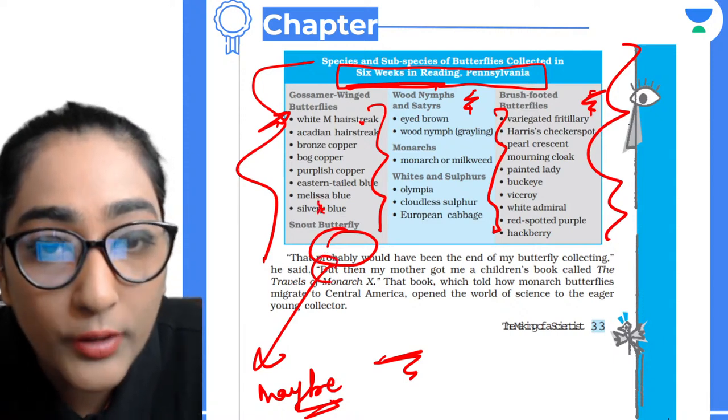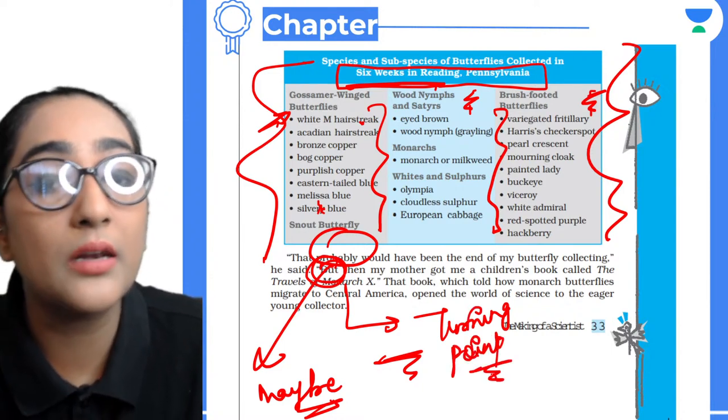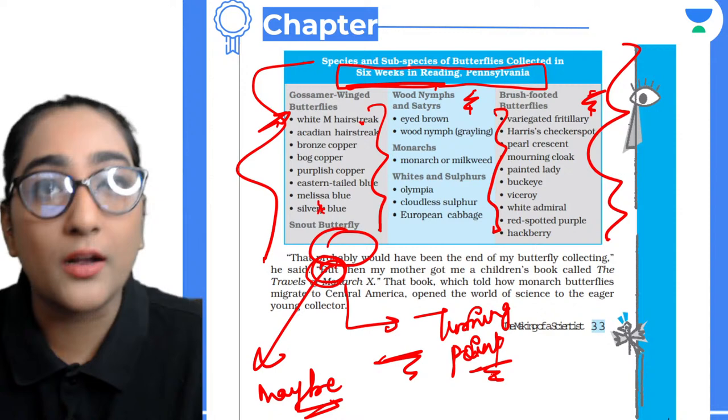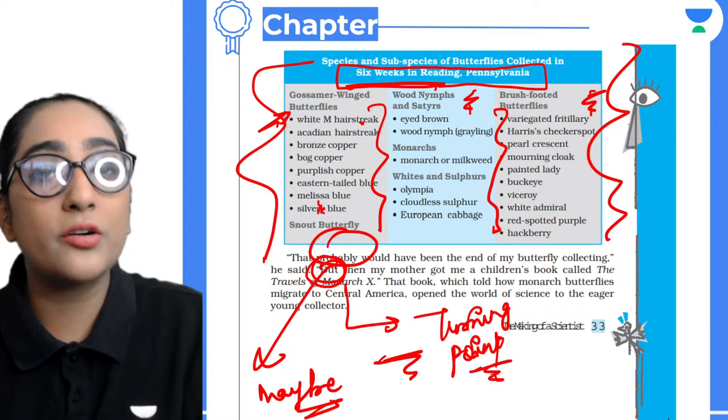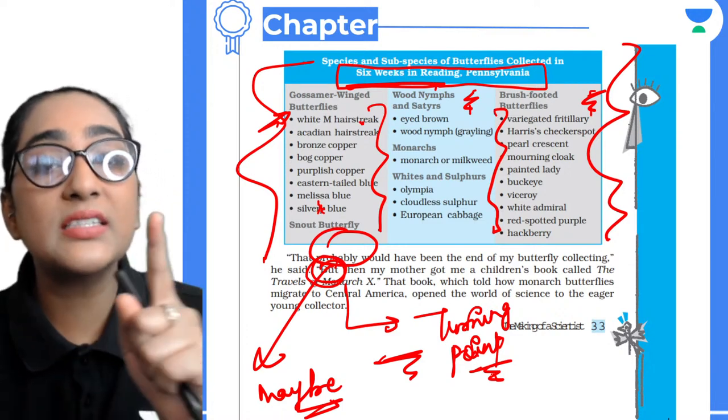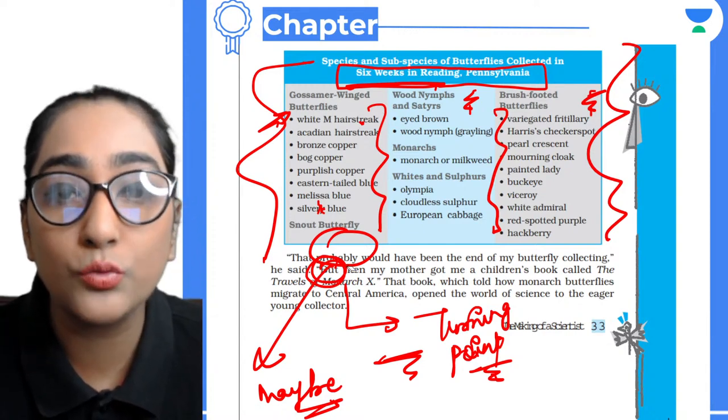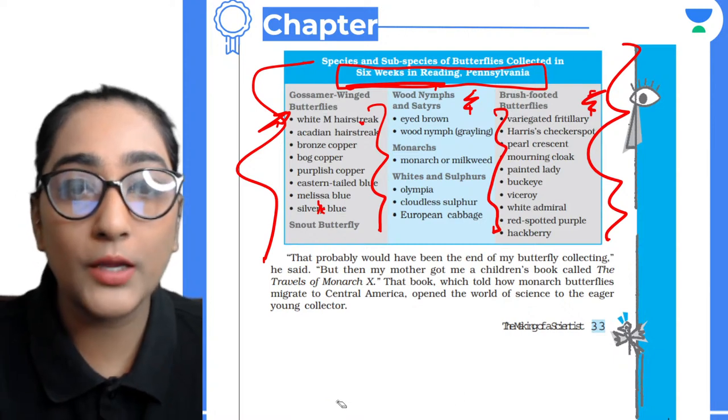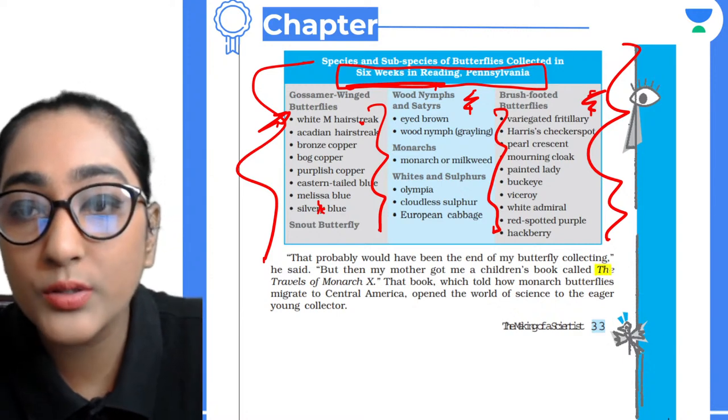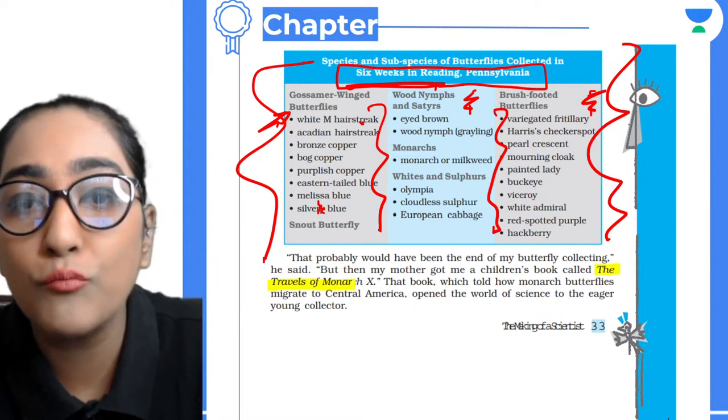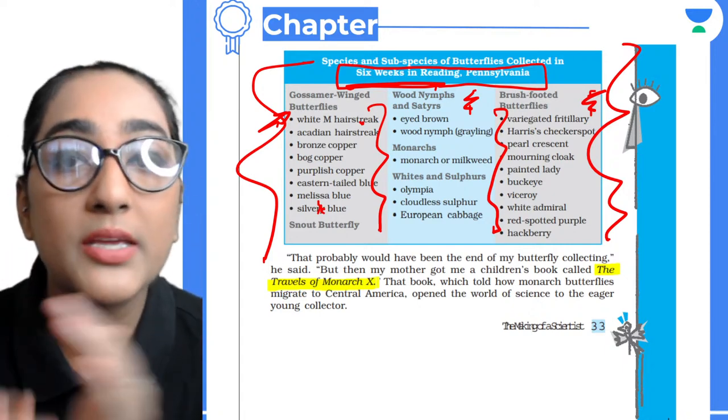Probably that would have been the end of my butterfly collecting, he said. But then my mother got me a children's book. Now, what is the name of that book? A lot of students write it wrong. The book's name is 'The Travels of Monarch X.' Please remember it - T-H-E Travels of Monarch X.